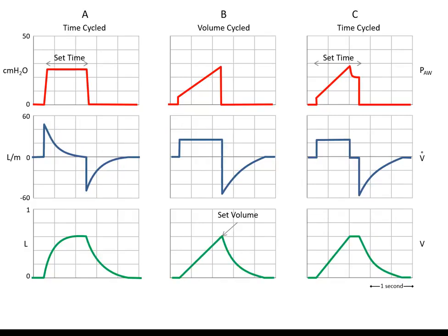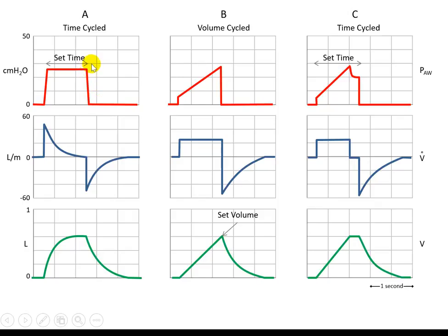The third variable is how the breath is ended. The first was the initiation of the breath, the second was the limitation of pressure, flow, or volume between initiation and end, and the third variable is the end of the breath — what we call cycling, or changing from inspiration to expiration. You can set a time, and once that time has elapsed, the pressure is released and the breath ends. This would be time cycled, as opposed to cycling based on volume.